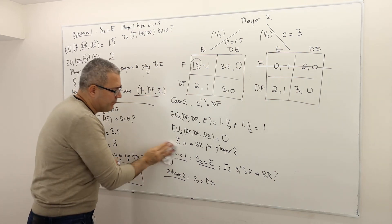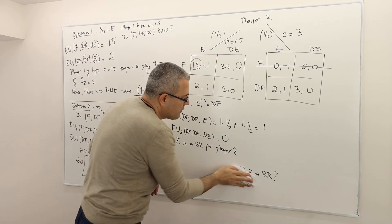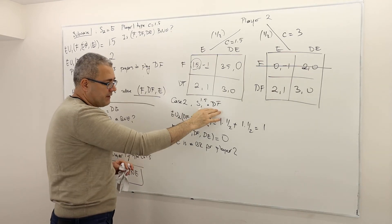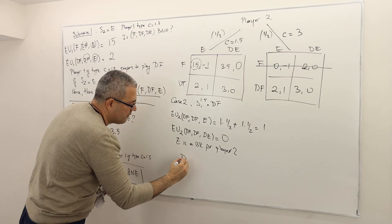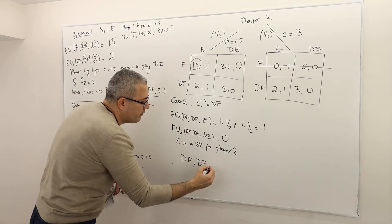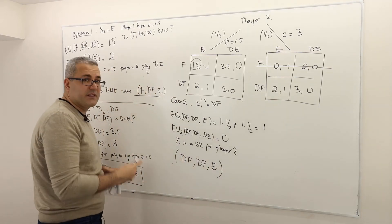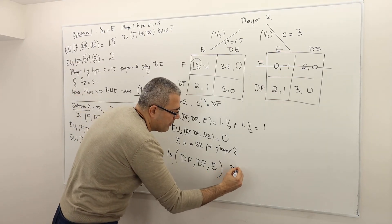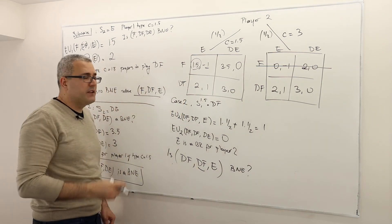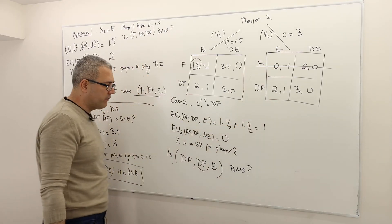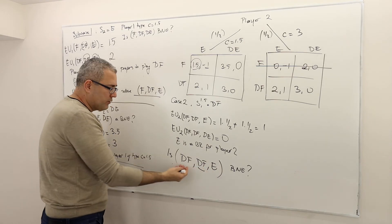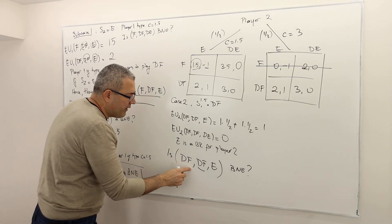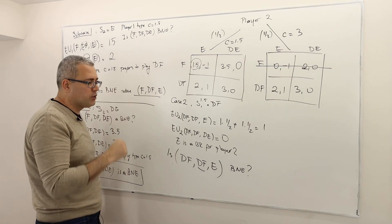So what does that mean? That means only E is a best response for player 2. Therefore, I don't need any sub-case in this case. So I showed the following: if S1 equals DF, then for player 2 the best response is E. The next question — I'm not done yet with case 2 — is this strategy profile a Bayesian-Nash equilibrium?